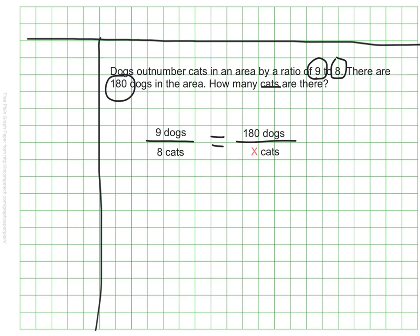So here we have our proportion set up, and I want to point something out that's very important. And that is that your units must match. So you can see here that on this top part of my ratio, I have dogs,